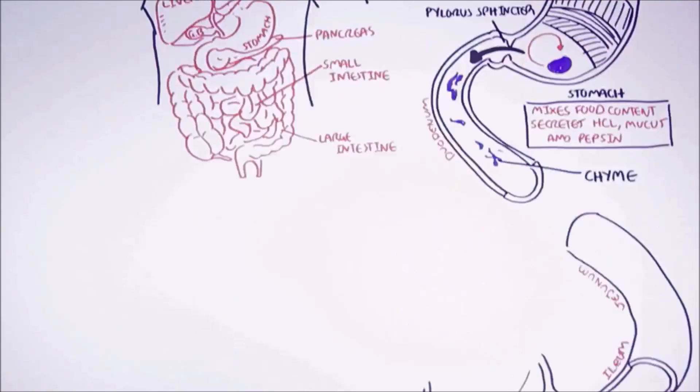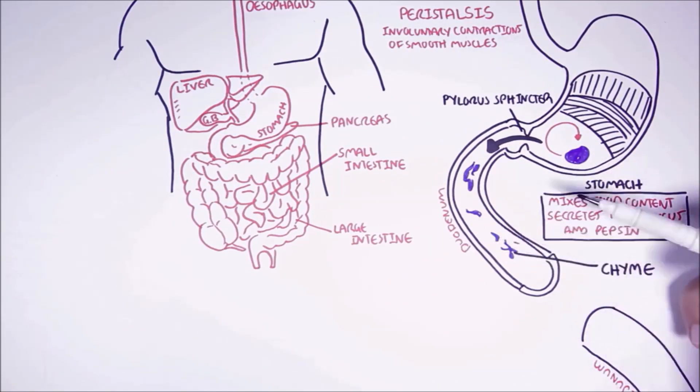The small intestine is very important because it is where most of the digestion and absorption of food takes place. However, it cannot do this without the help of the accessory organs: the liver, the gallbladder, and the pancreas.